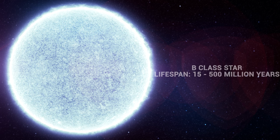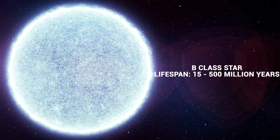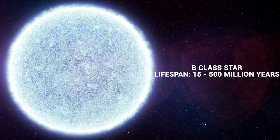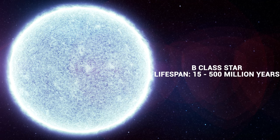B-class stars are also blue stars, but are less massive than an O-class star, weighing anywhere from 3 to 17 times the mass of our sun. Because of this, these stars can live anywhere from 15 to 500 million years, depending on their mass. B-class stars are still relatively rare, with only 1 in every 800 stars belonging to this group.